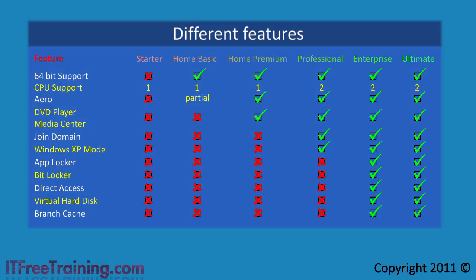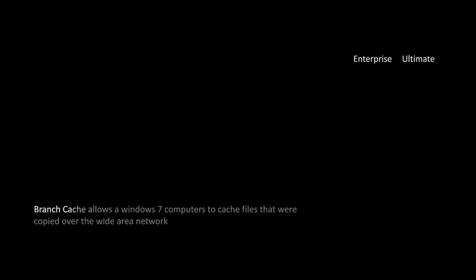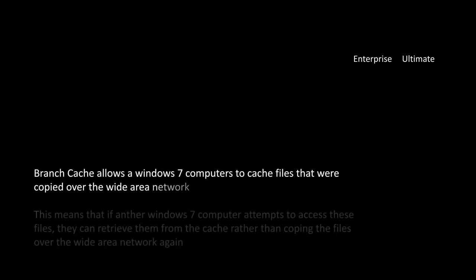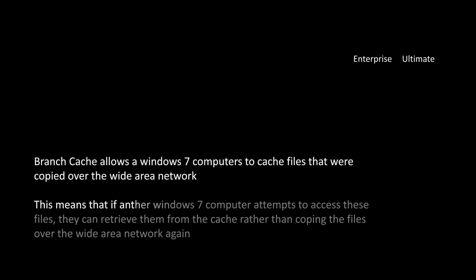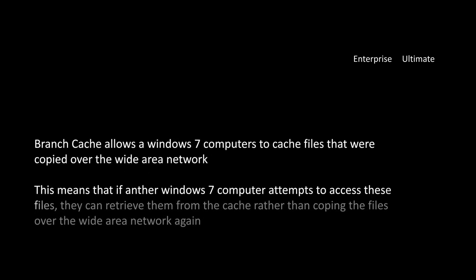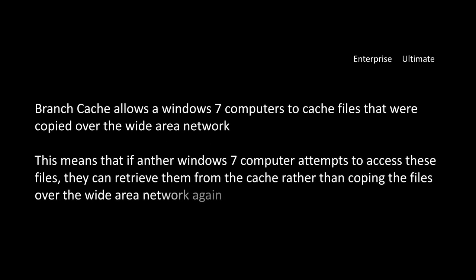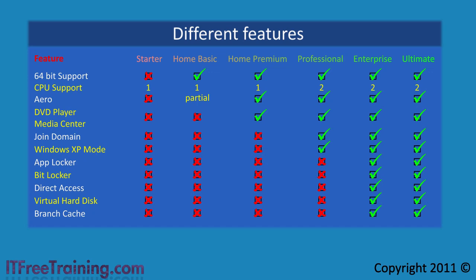Lastly, these two editions support Branch Cache. Branch Cache allows a Windows 7 computer to cache files copied over the wide area network, so that if another Windows 7 computer attempts to access those files, it can retrieve them from the cache rather than copying them over the WAN again. Feature-wise, the Enterprise and Ultimate Editions are the same. The difference is licensing: the Enterprise edition is only available to customers using Microsoft's volume licensing, while the Ultimate Edition is available via retail.